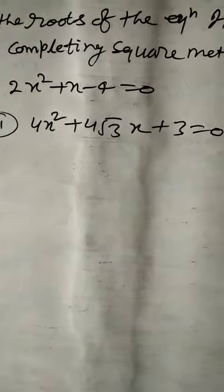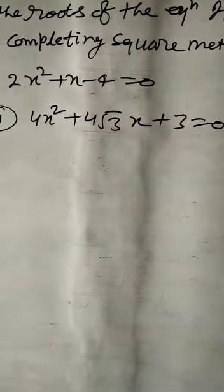First check the discriminant. If B square minus 4AC greater than 0, real and distinct roots. If B square minus 4AC equal to 0, real and equal roots. If B square minus 4AC less than 0, no real root.